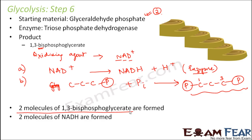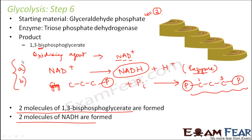Another important thing: two molecules of NADH are also formed. For the first molecule of glyceraldehyde phosphate, one NADH is formed; for the next molecule, one more NADH is formed — so two molecules of NADH in total. These need to be counted because NADH are energy-rich molecules: one molecule of NADH is capable of producing three molecules of ATP. So in step 6, we produce two molecules of NADH and two molecules of 1,3-bisphosphoglycerate.